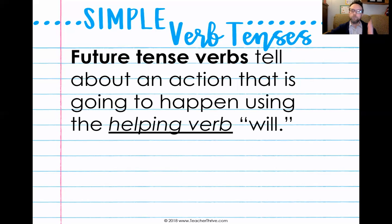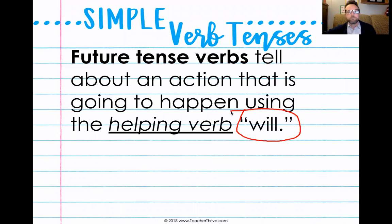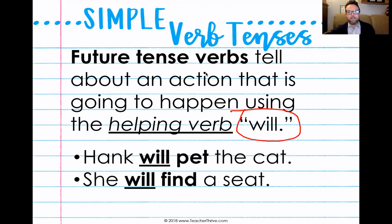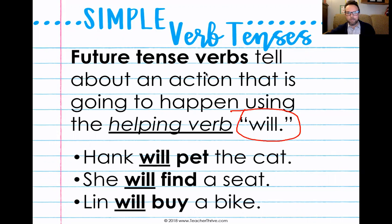A simple future tense verb tells about an action that is going to happen, and it uses the helping verb 'will' — that is an important part. If you see something that has the helping verb 'will,' then that is a simple future verb. For instance, 'Hank will pet the cat' — when is he going to pet the cat? In the future. 'She will find a seat.' 'Lynn will buy a bike.' Each of these are future actions, something going to happen in the future, using that helping verb 'will.'